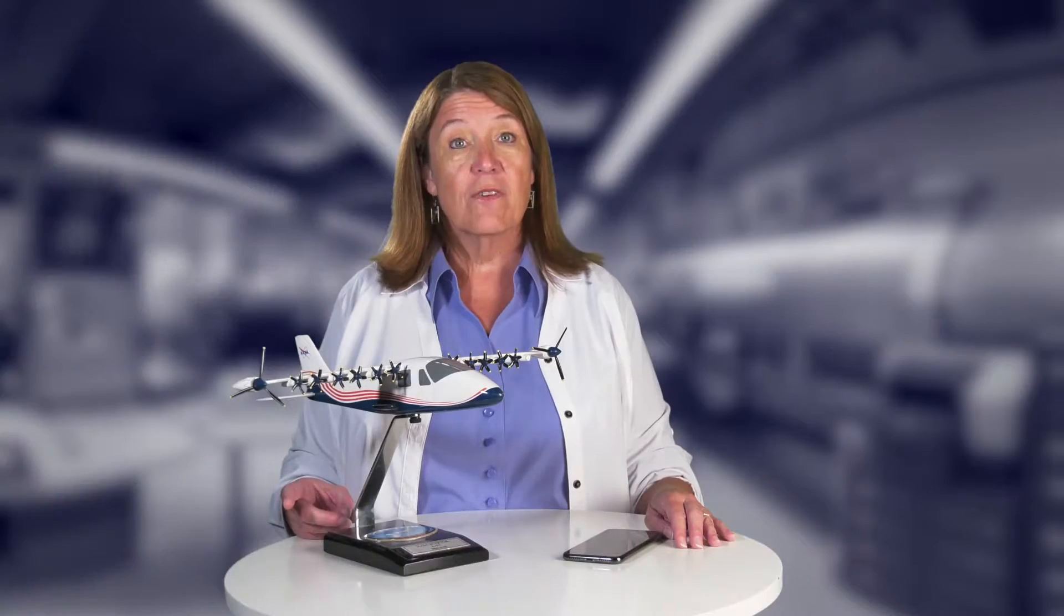Aeronautics is the first A in NASA and the science of flight. One of our latest projects is a battery powered X-plane. It's called the X57 Maxwell and it uses lithium ion batteries.